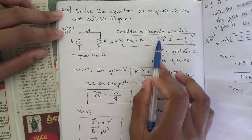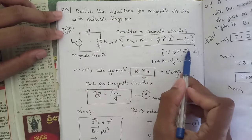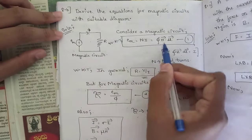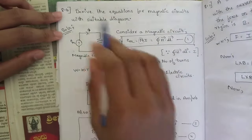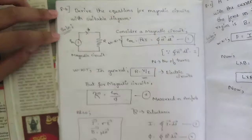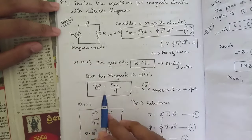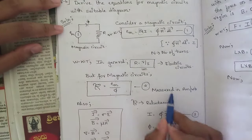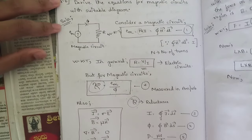That is equal to the line integral of H dot dL, since the line integral of H dot dL equals I — this relation we get when solving Ampere's law. So NI equals the line integral of H dot dL, where N represents the number of turns. We know that in general R equals V by I in electric circuits, so for magnetic circuits R equals EM by phi.